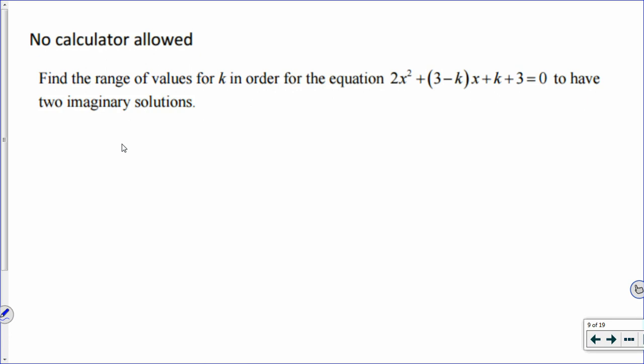But they have this k instead of numbers filled into the function. So we're supposed to find the range of values for k, so k could be anything. And we're looking for a range of values that will give two imaginary solutions to this quadratic equation. So two imaginary solutions for x, but we're asked to find the values for k that would give two imaginary solutions.